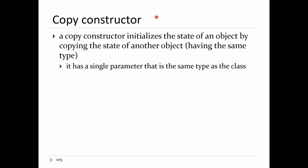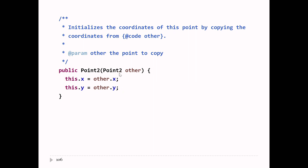A copy constructor is very common — it lets you copy another object of the same type. The copy constructor always has the name of the class and one parameter whose type is the same class. So the Point2 copy constructor has a parameter whose type is Point2. This constructor copies the x and y coordinate from the other point and assigns them to the newly created point: this.x equals other.x and this.y equals other.y.